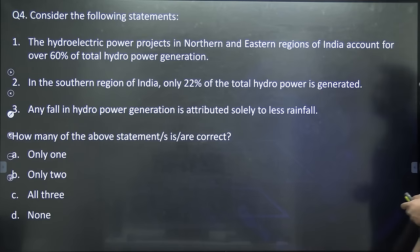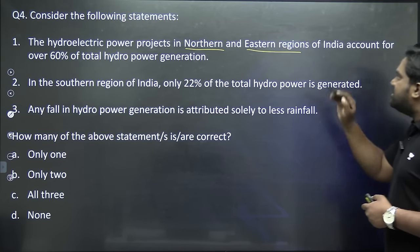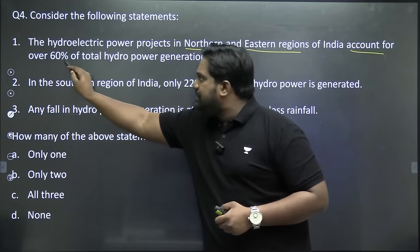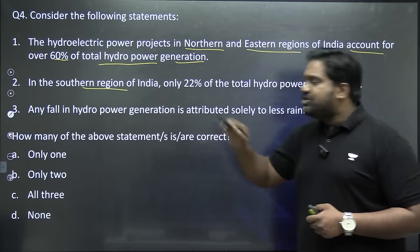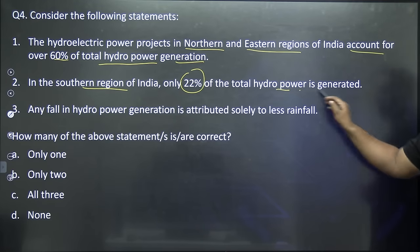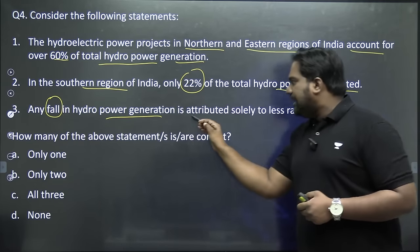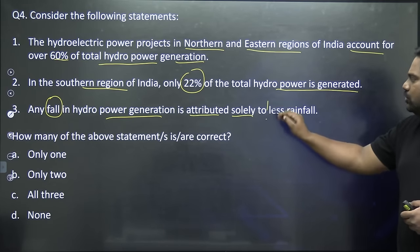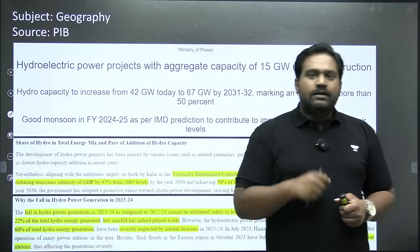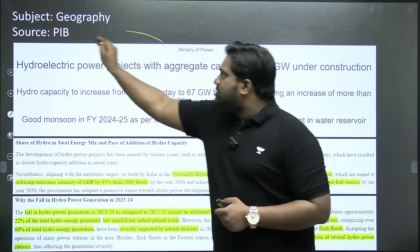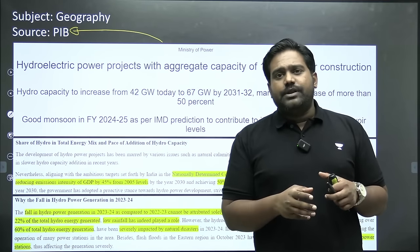Let's look at question number four. Consider the following statements: Hydroelectric power projects in northern and eastern regions of India account for over 60% of total hydropower generation in the country. In the southern region of India, only 22% of total hydropower is generated. Any fall in hydropower generation is attributed solely to less rainfall. How many of these statements are correct?